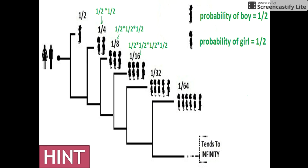Let's see the hint. We know that the probability of giving birth to a boy is 1/2 and the probability of giving birth to a girl is also 1/2, since there are only two cases — either a girl can be born or a boy can be born.